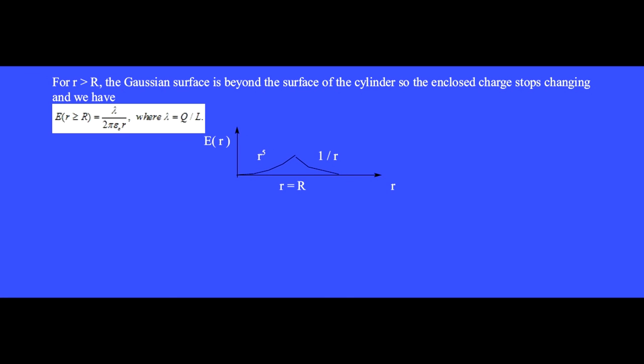Within the cylinder, the electric field grows as r to the fifth, but beyond the surface of the cylinder the electric field decreases as 1 over r.